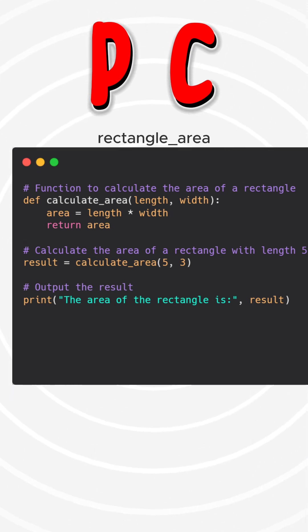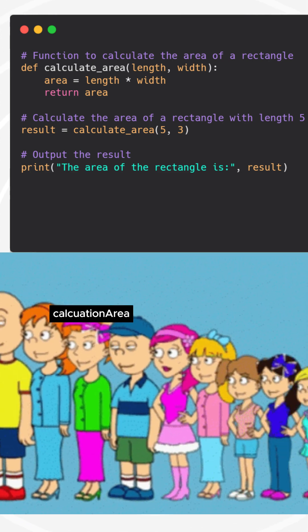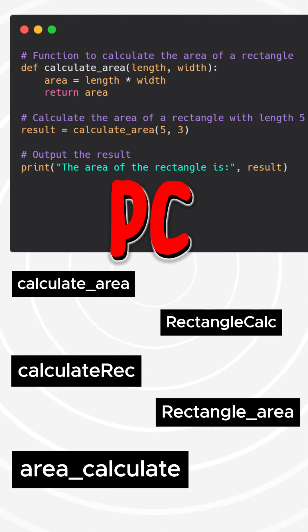Or you can name it as rectangle_area. The choice depends on the person, but the name should clearly state its purpose and be concise.